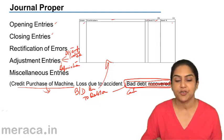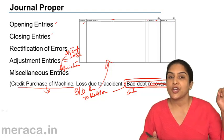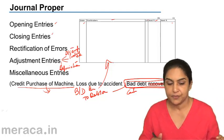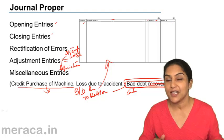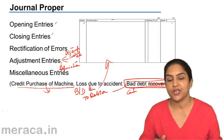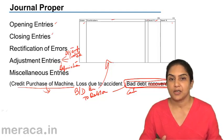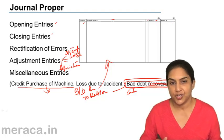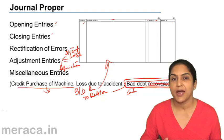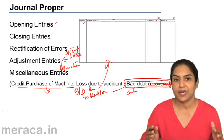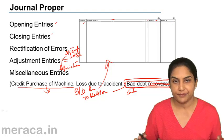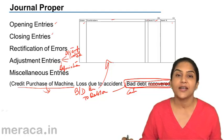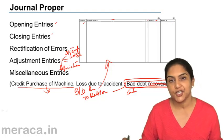So these are some of the examples of entries which could go to the journal proper. To summarize: all cash and bank transactions go in the cash book; all credit purchase of goods in the purchase day book, or credit sales of goods in the sales day book; purchase return in the purchase return journal; sales return in the sales return journal. If there are many transactions with bills payable and bills receivable, such books may also be kept. All other remaining entries will find their place in the journal proper.